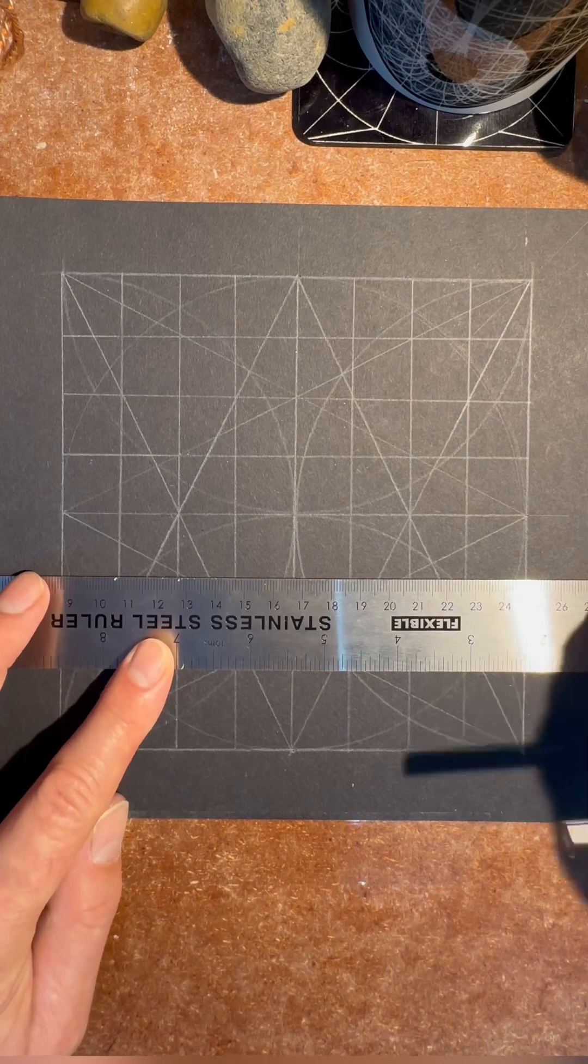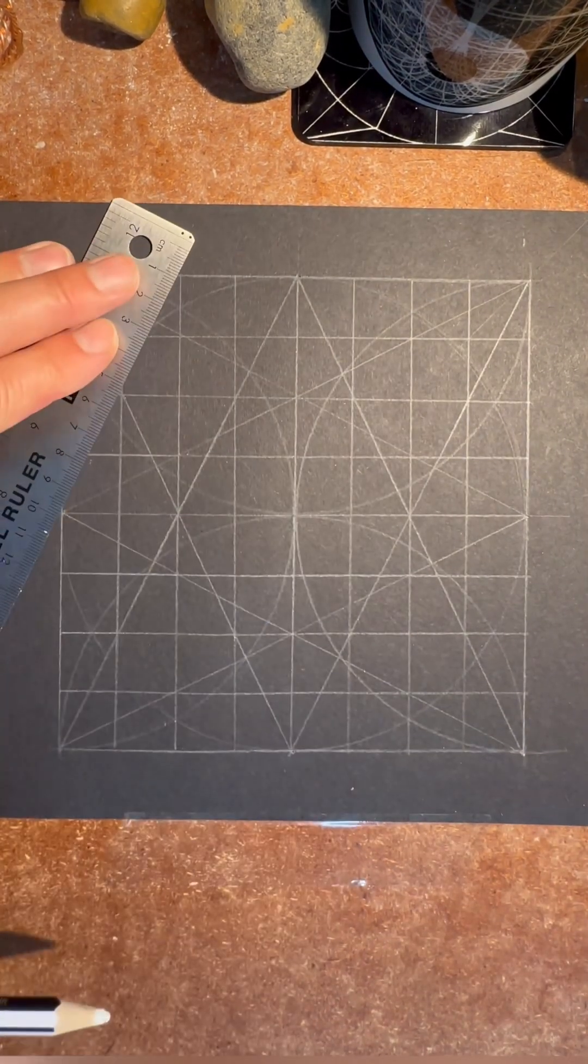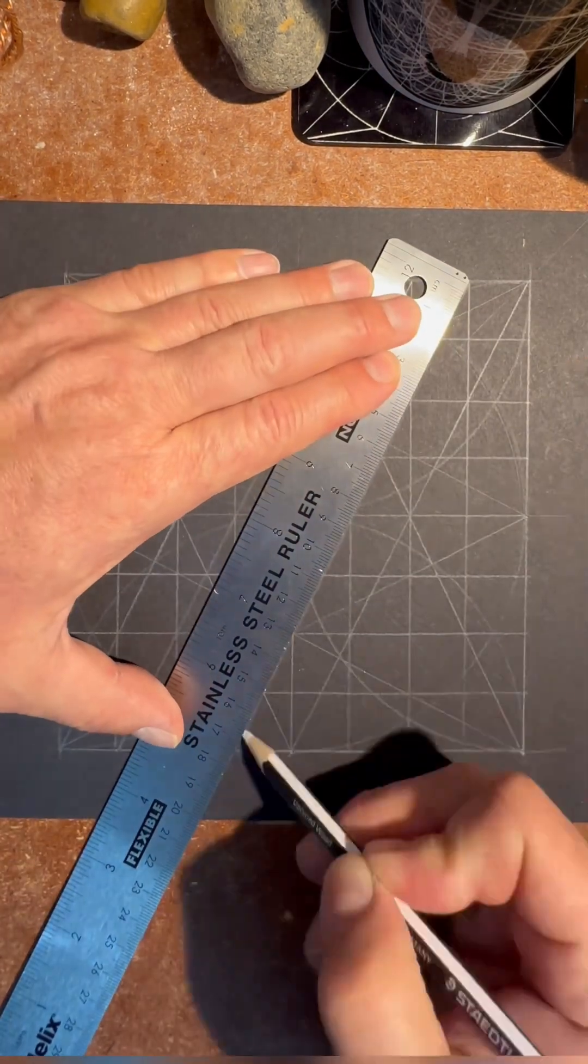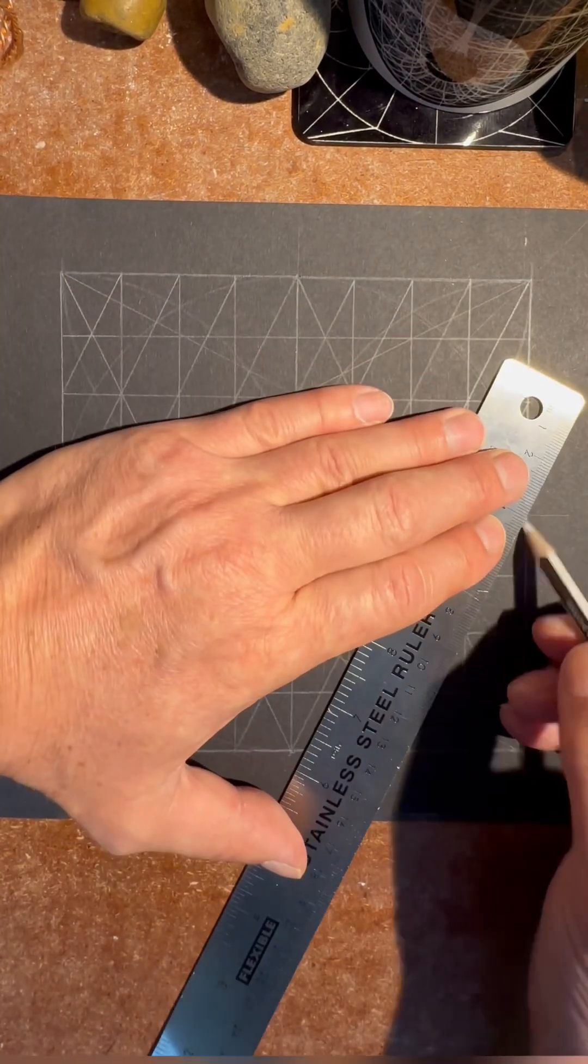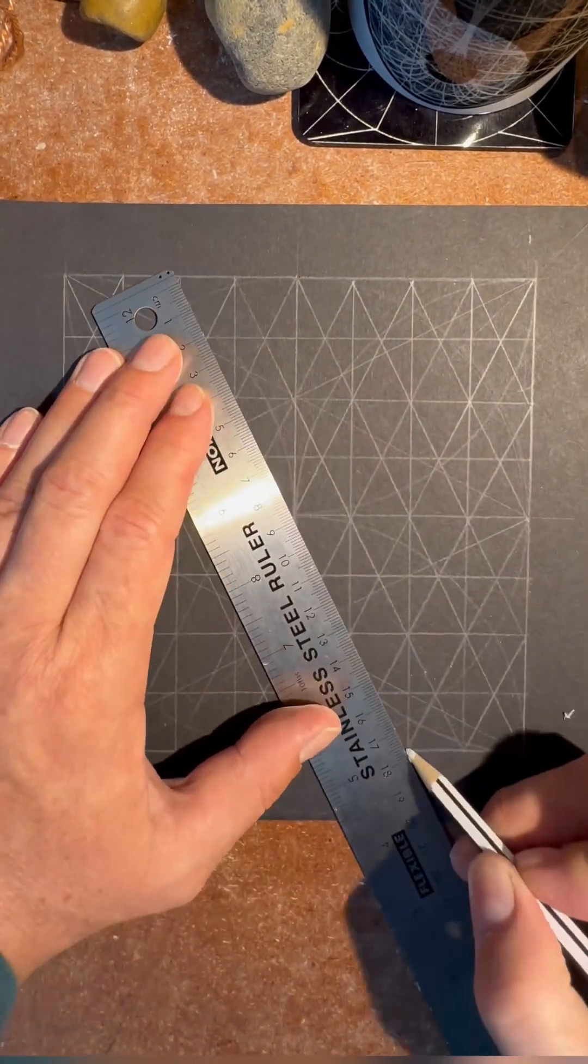Once you have the 64 squares, you will then be able to connect all the corners, every 2 to every 1, so you're going 2 to 1 ratio all the way across in each direction, and you will form a beautiful triangular grid.